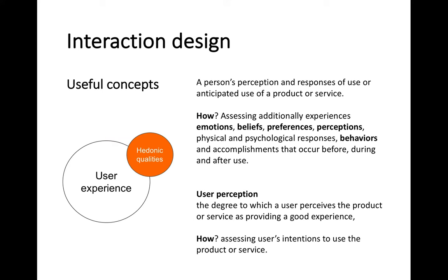The term user experience emerged a few years ago and tends to be misinterpreted with usability, but they are two different terms. Usability focuses on measuring pragmatic things — effectiveness, efficiency, and satisfaction — while user experience focuses more on emotion and hedonic qualities. Pragmatic qualities are easier to measure because they can be quantified, whereas hedonic qualities are harder to measure because they relate to emotions, which differ from user to user and are less tangible.